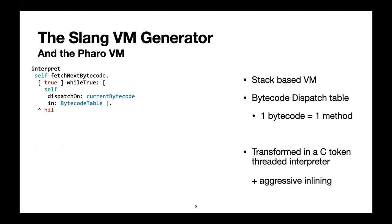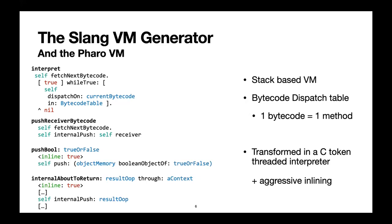Now, how does it look at the end? The interpreter loop looks like this — it's a normal, small method that works through a dispatch table. For each instruction it dispatches on a bytecode method. It's a stack VM where each bytecode is eventually implemented as one method, then transformed as a token for the interpreter with inlining. The bytecodes are actually really small methods. We also have some helper methods like push_boolean and internal_return — one to push booleans to the stack, the other to return to a caller context.